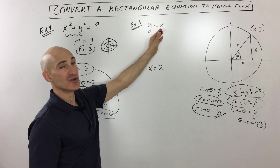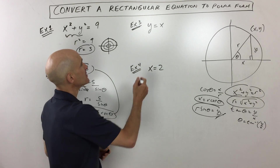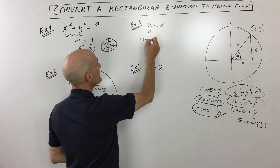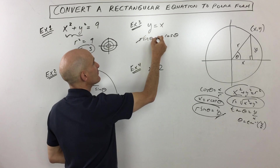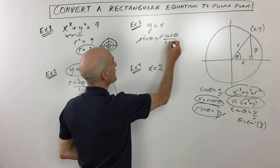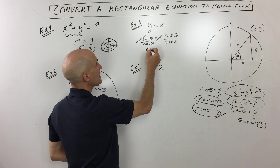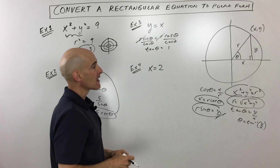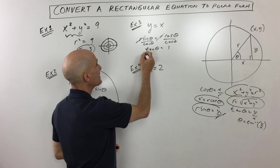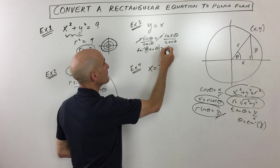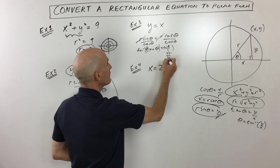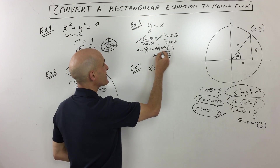Example three: y equals x. We substitute x equals r cosine theta and y equals r sine theta to get r sine theta equals r cosine theta. Dividing both sides by r, those cancel out. Then dividing both sides by cosine theta, sine over cosine equals tangent of theta, and cosine over cosine is one. So tangent theta equals one. Taking the tangent inverse of both sides, tangent inverse of one is pi over four, so theta equals pi over four.